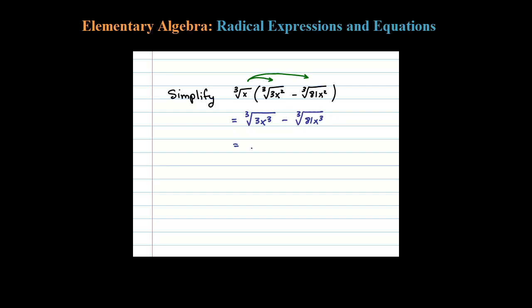Okay, so minus cube root—well, 81 equals 3 to the fourth, so I'm going to write it like that.